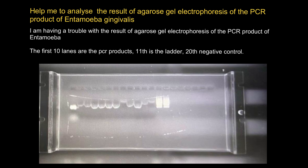Hello and welcome to Nikolai's genetics lessons. Today I got the following request: help me analyze the result of agarose gel electrophoresis of the PCR product of Entamoeba gingivalis. The first 10 lanes are the PCR products, the 11th is the ladder, and the 20th is the negative control.